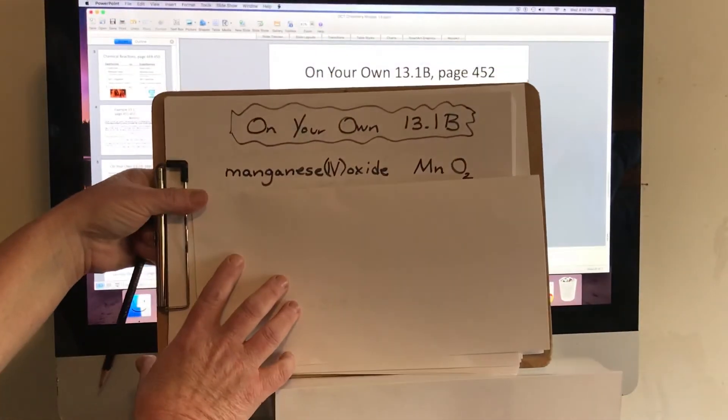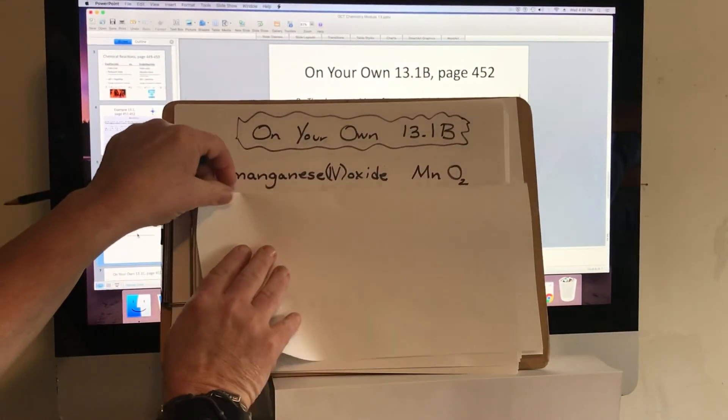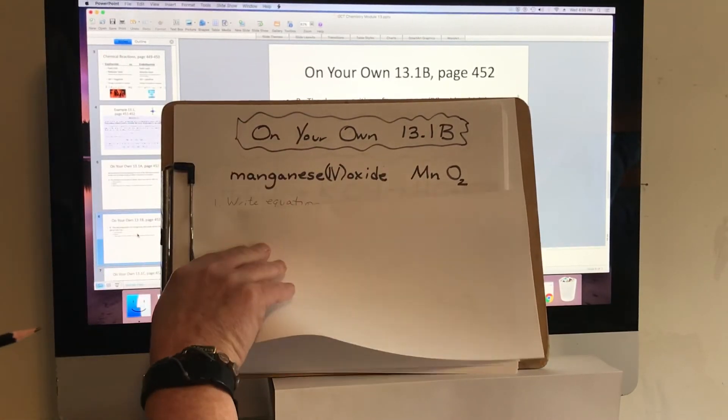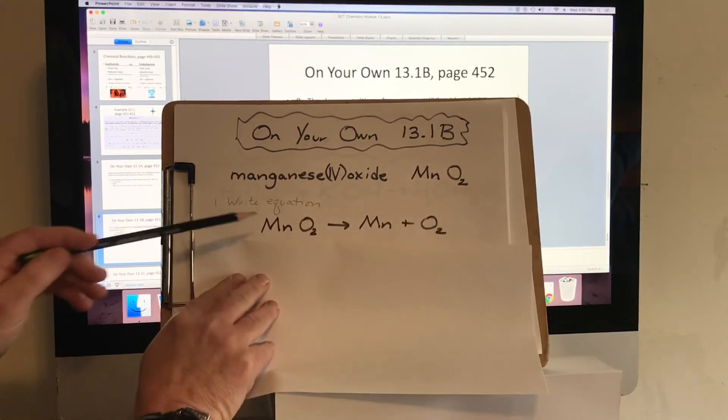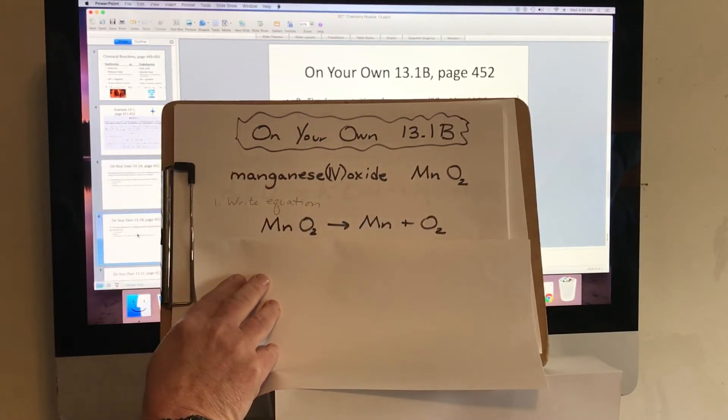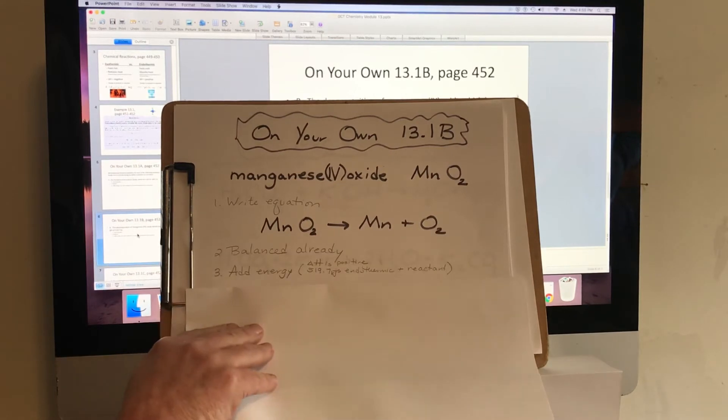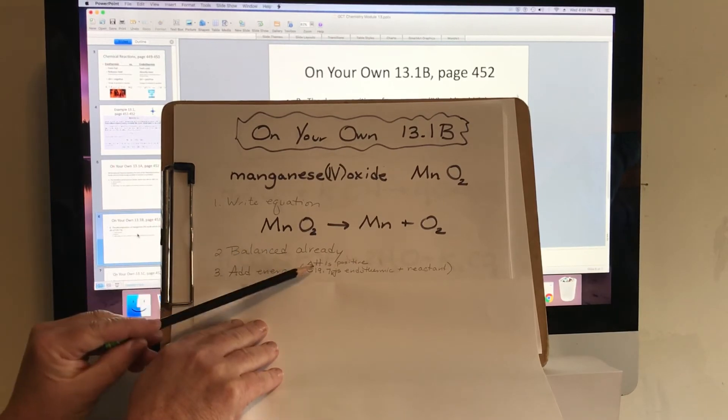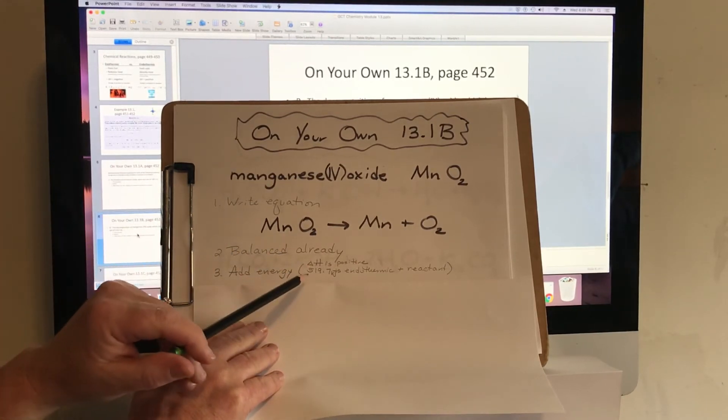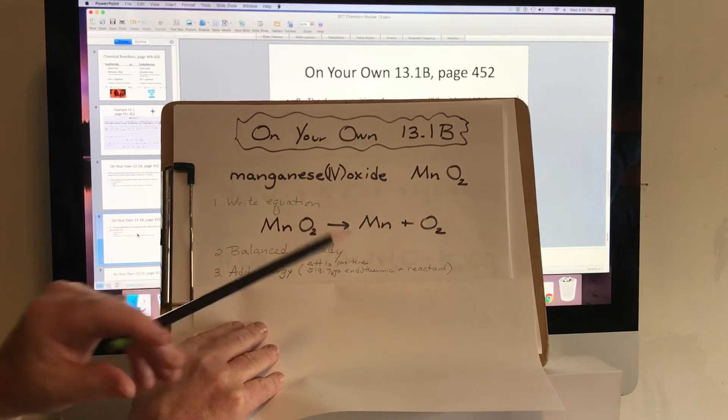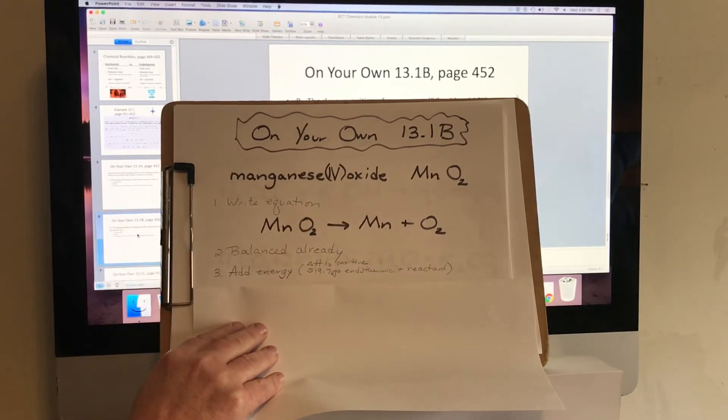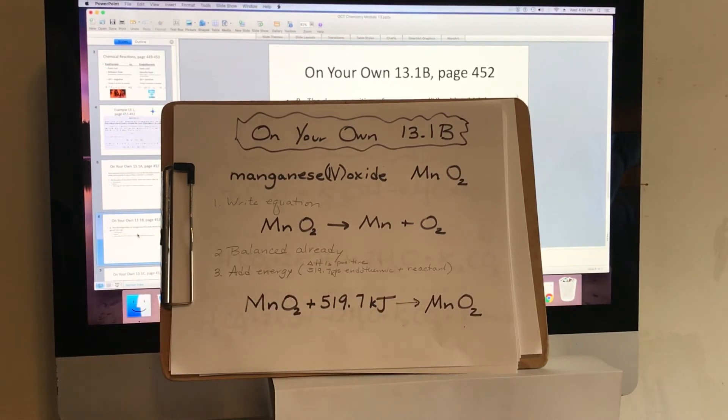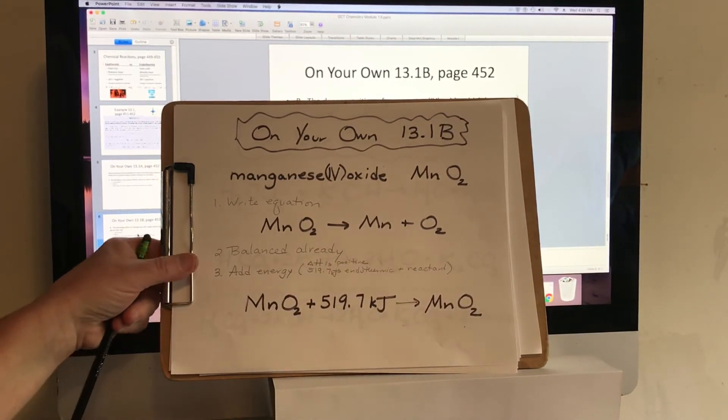So let's look at manganese oxide. It is written, this is the abbreviation for manganese and oxide. And our equation, as it's broken down, it's just broken down into the two elements. Then it's already balanced. We check for that. It looks good. Now we have to add the energy. Again, since the energy was positive, the 519.7 kilojoules is added as a reactant. So it's going to be added to the left side of the equation. And that's it for that one.